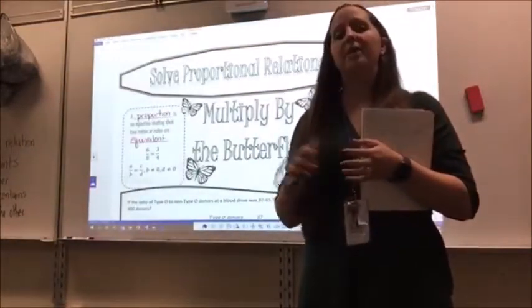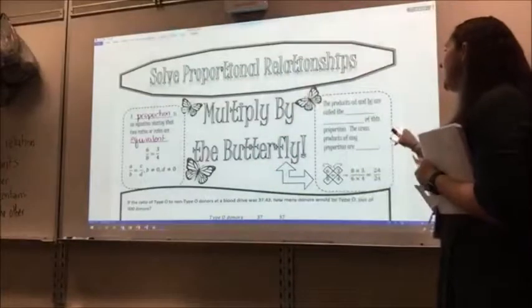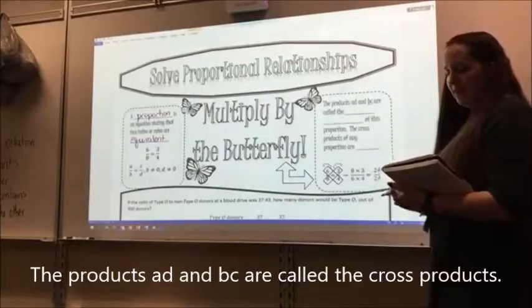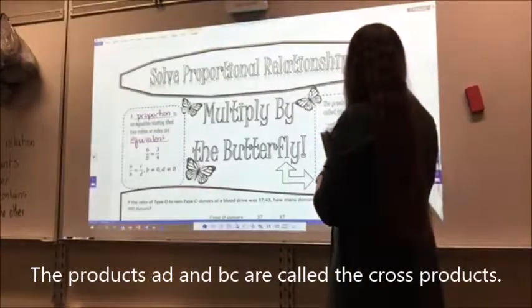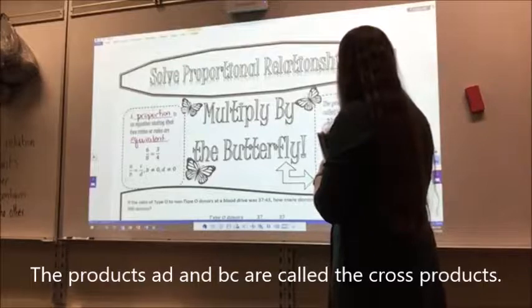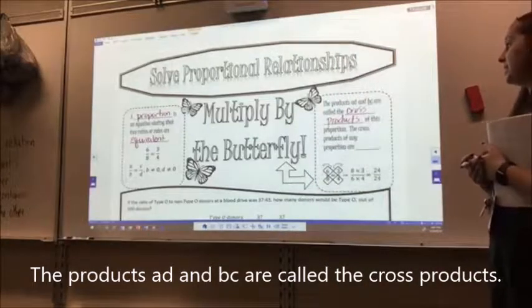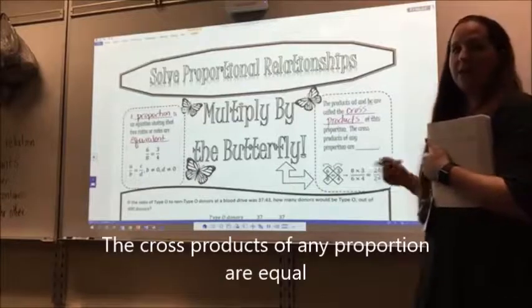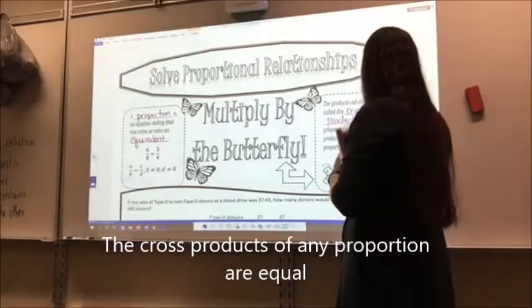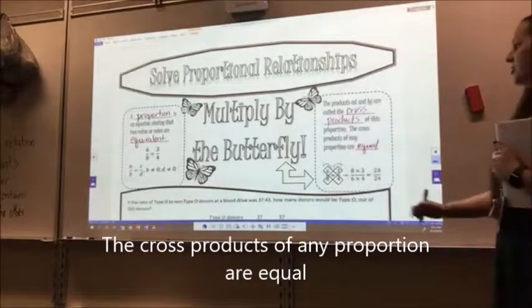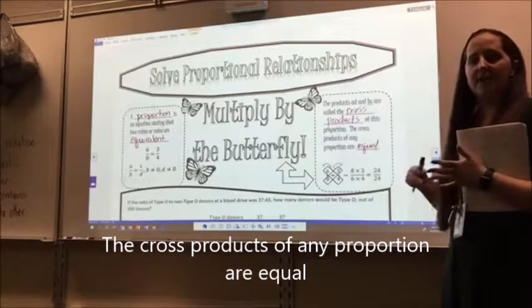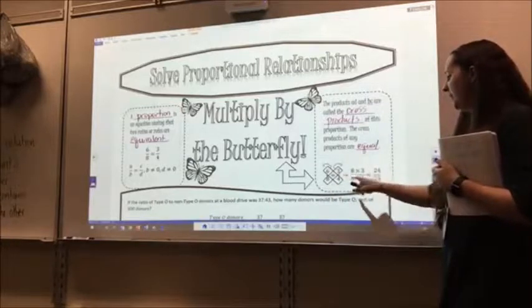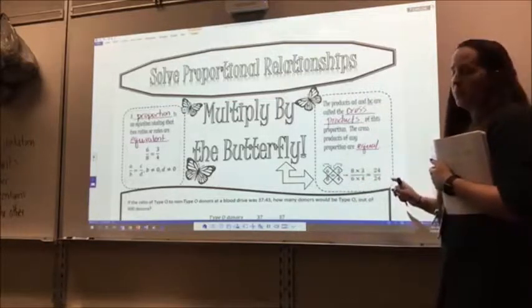So b and d can't be zero, but they can still be proportional to each other. On this side, the products ad and bc are called the blank blank of this proportion. In those two blanks you're going to write cross products. So the products ad and bc are called the cross products of this proportion. The cross products of any proportion are blank. In that blank you're going to write equal. So you can see here, I'm going to use my same example, the six-eighths and three-fourths, and I drew my butterfly. This means I can do eight times three and six times four. They should be equal to each other. If they're not equal to each other, they're not a proportional relationship.